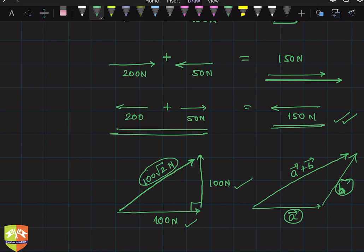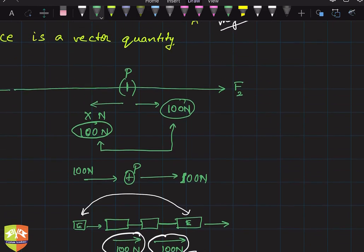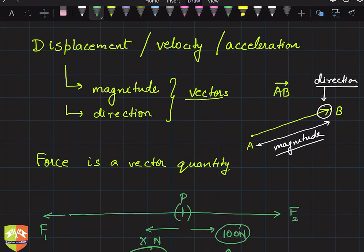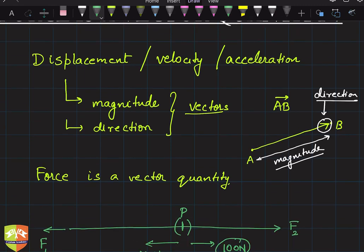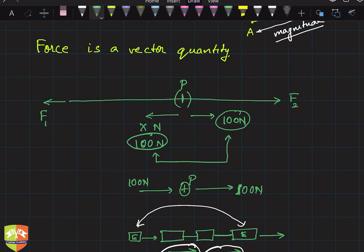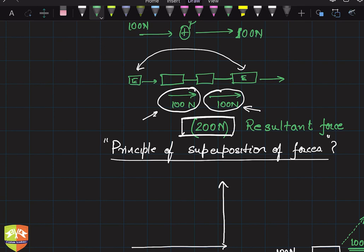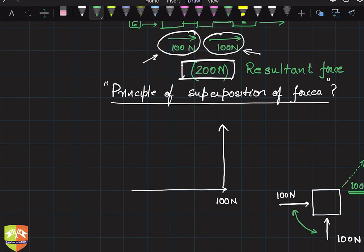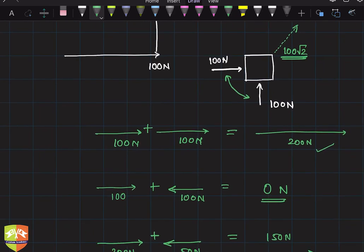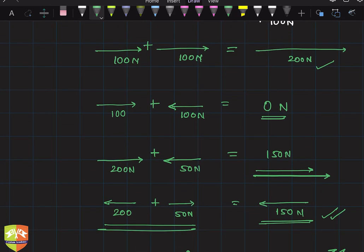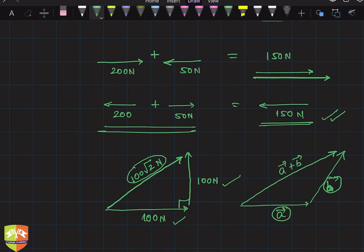In summary, we understood that force is a vector quantity which has not only magnitude but also direction. Forces get added up when acting in the same direction and get subtracted when acting in the reverse direction. Multiple forces can be replaced by a single resultant force by the principle of superposition of forces. We also saw operations on vectors: two forces in the same direction add up, two forces in reverse directions subtract, and we apply arithmetic to find the resultant magnitude. We'll continue discussing forces in the next session.